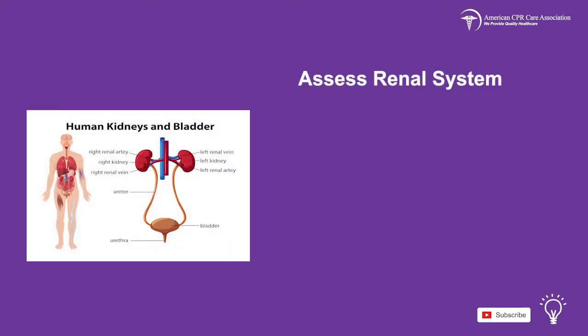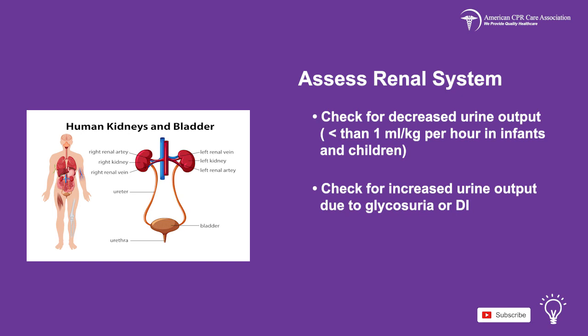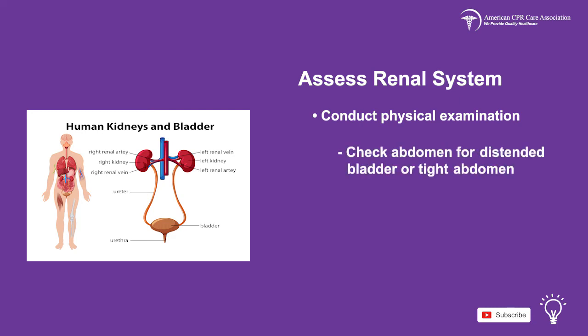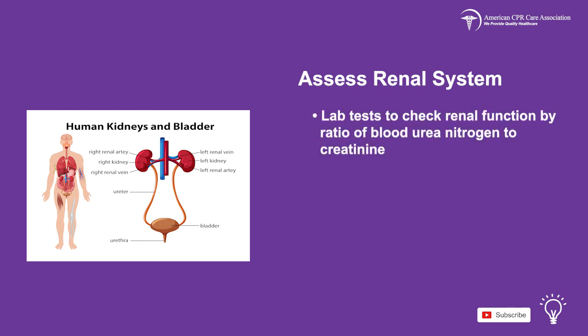Next, evaluate the child's renal system. Check for decreased urine output, which is defined by less than one milliliter per kilogram per hour in infants and children. You should also check for increased urine output due to glycosuria or DI. Conduct a physical examination, checking the abdomen for distended bladder or a tight abdomen. Check for low blood plasma volume and ensure correct urinary catheter placement. Get lab tests to check renal function by the ratio of blood urea nitrogen to creatinine, and check serum electrolytes.